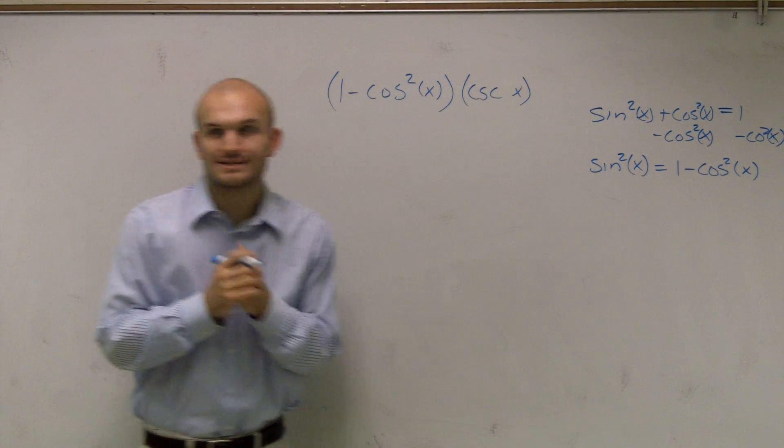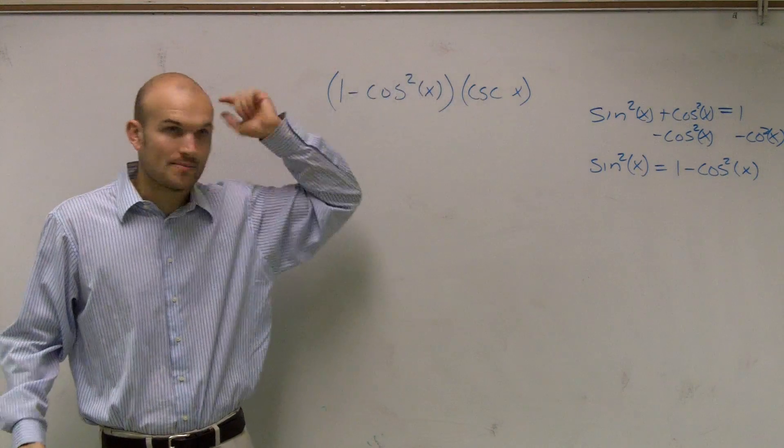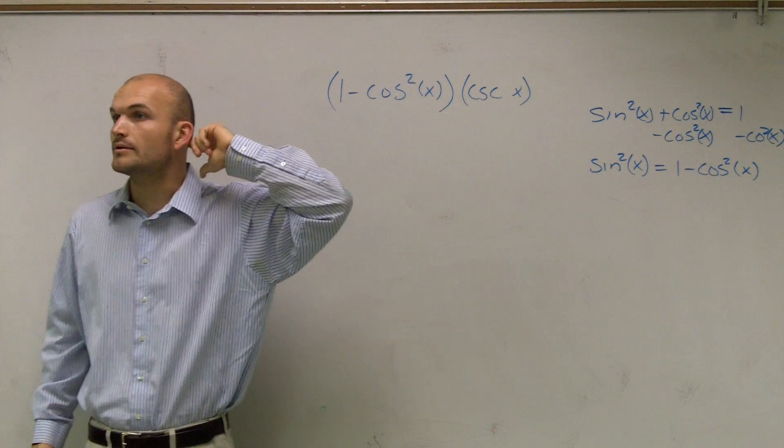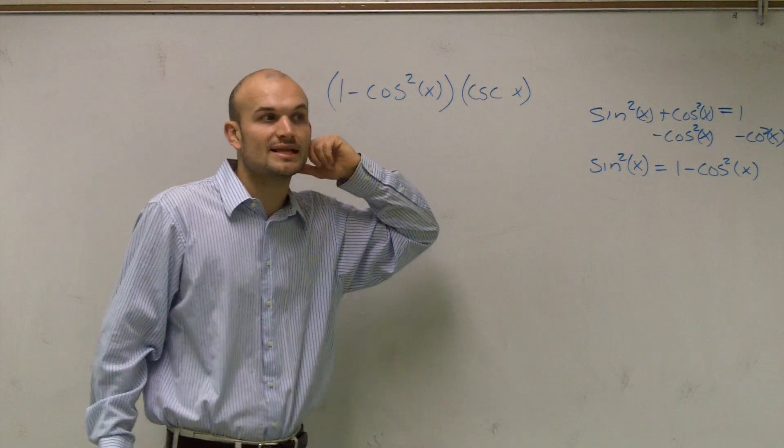So does everybody see what I did there? All right, whenever you see a square, it's automatically think, trig identity. OK, because it's more likely you're going to be using that to help you out.